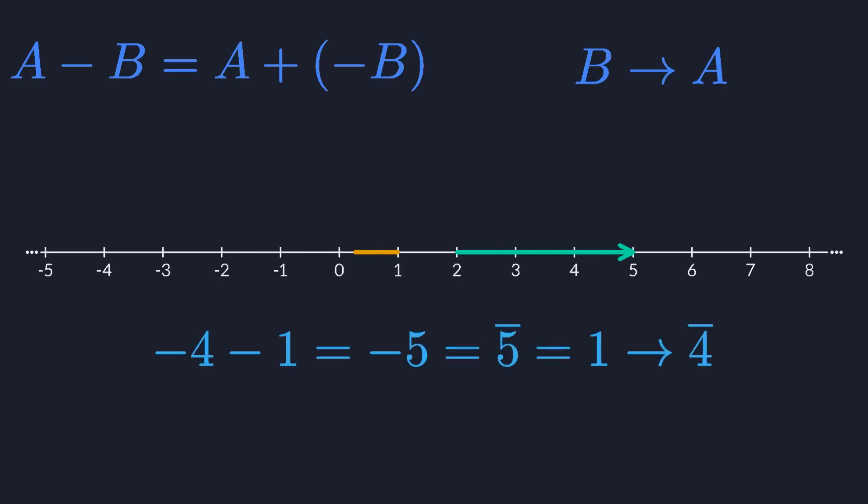Likewise, going from 1 to negative 4 requires 5 steps to the left. Negative numbers point left, positive ones point right.